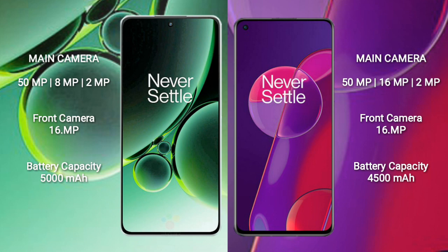OnePlus Nord 3 comes with a 5000mAh battery with 80W fast charging support. OnePlus 9RT comes with a 4500mAh battery with 65W fast charging support.